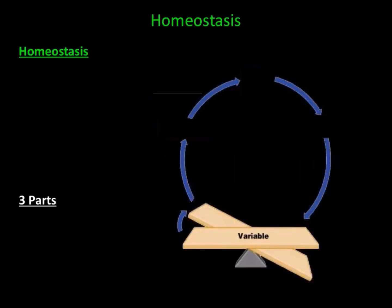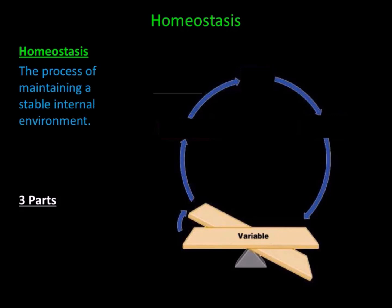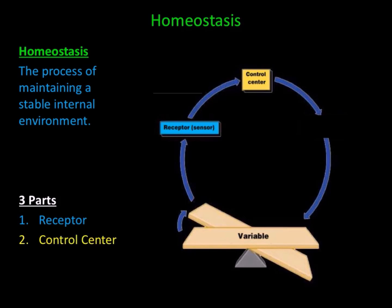In this lecture, we're going to talk about homeostasis and all of the mechanisms that help the body maintain homeostasis. Homeostasis is the process of maintaining a stable internal environment. There are three parts within the human body that help maintain homeostasis: the first is a receptor, the second is the control center, and the third is an effector.